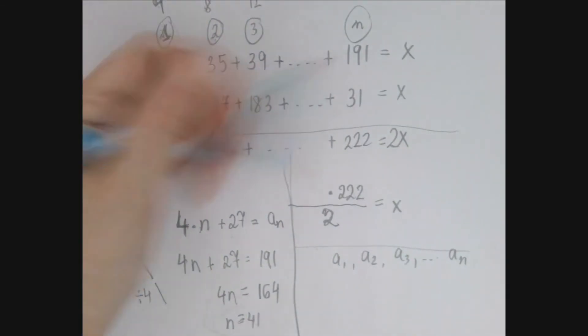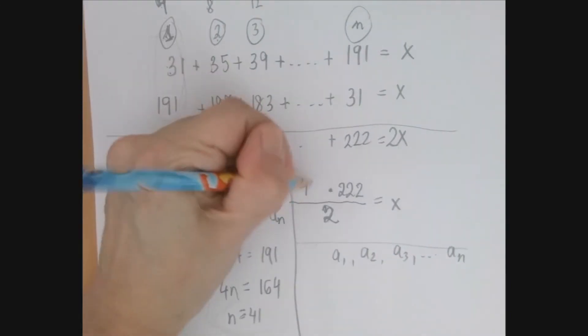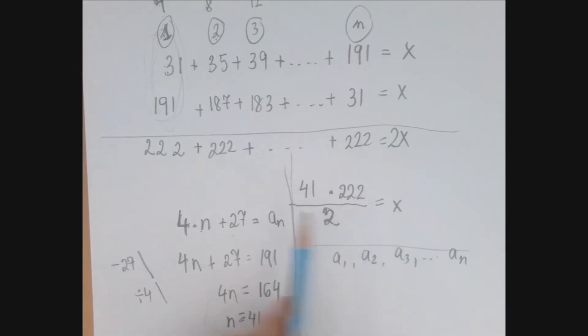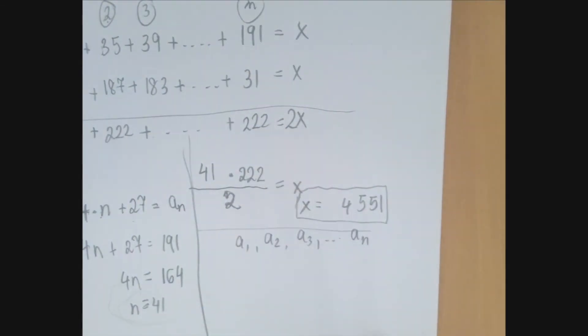So basically we go back to our computation, we line the two lines up backwards, the sum is always 222, and we add it to itself, as we just found out, 41 times. So the number of seats in the theater is going to be 41 times 222 divided by 2, which is 4551. So, thank you for watching.